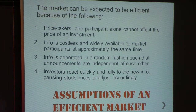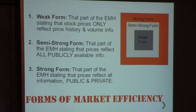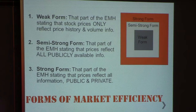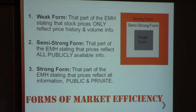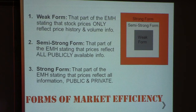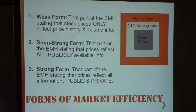There are three forms of market efficiency: the weak form, the semi-strong form, and the strong form. The weak form dictates that the market basically reflects only price history and information on volume — past data such as graphs and price history for each stock. In the semi-strong form, all past info plus all publicly available information is reflected in the stock price.